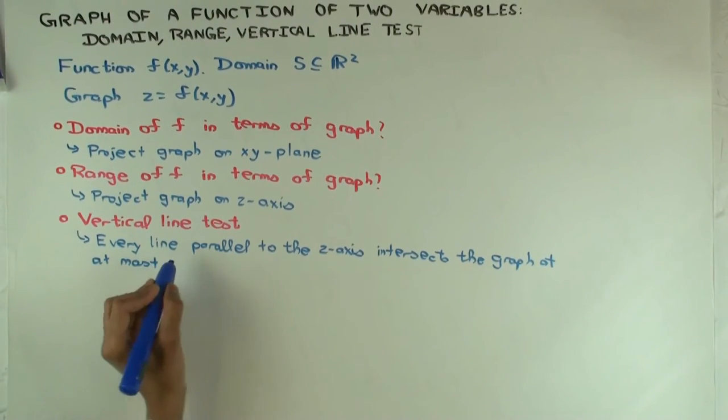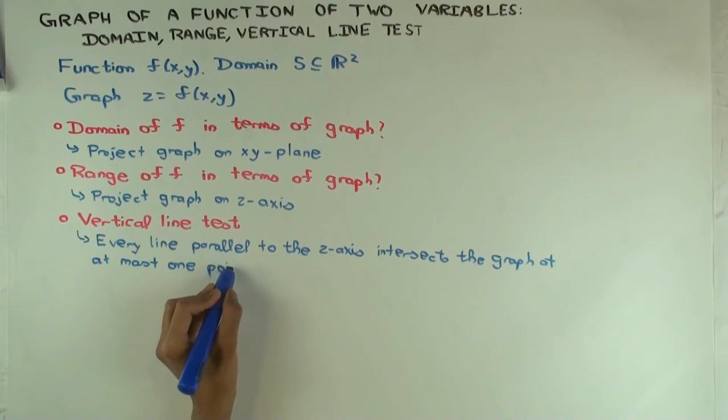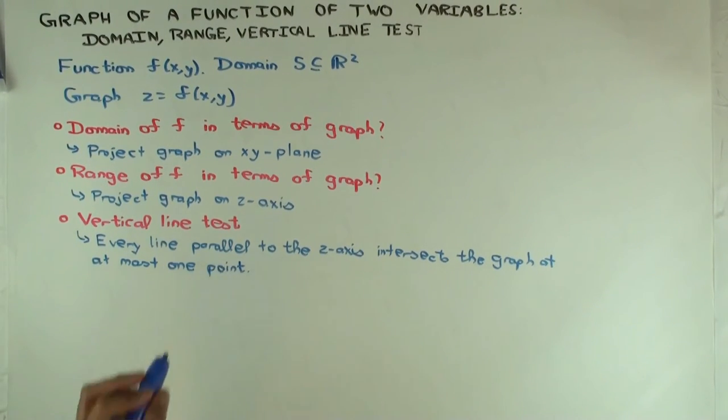Now, what does a line parallel to the z-axis look like in terms of its equations? So you have to be a little careful. As you hopefully know, to describe a line in R3, how many equations do you need?